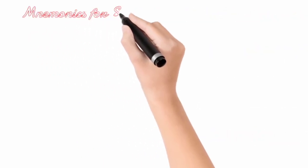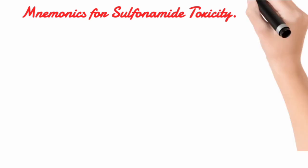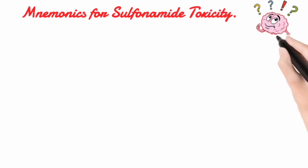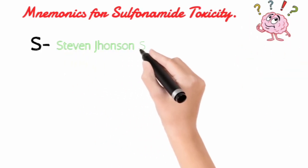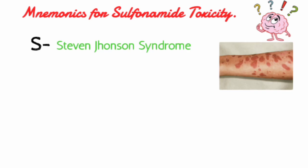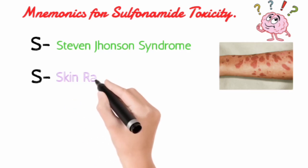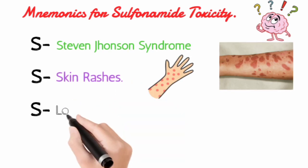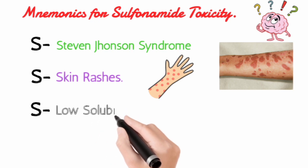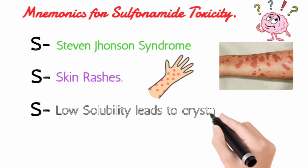Now let's move towards the mnemonics. Just remember the four S's. The first S is for Stevens-Johnson syndrome. The second S is for skin rashes. The third S is for low solubility, which mainly causes crystalluria.